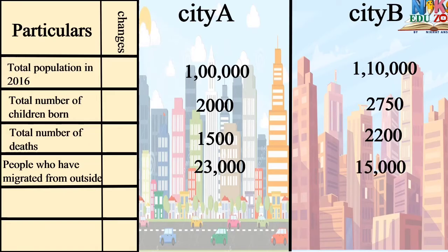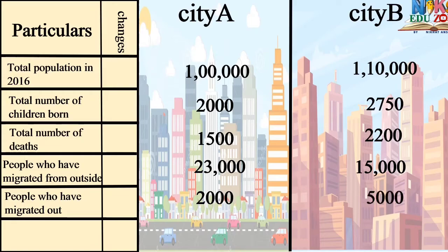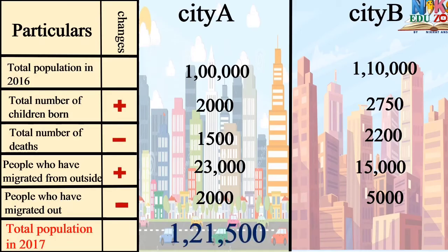15,000 people migrated into City B. 2,000 people migrated out from City A, whereas 5,000 migrated out from City B. So the total population of City A in 2017 would be 1 lakh 22,500, whereas the population of City B would be 1 lakh 20,550.